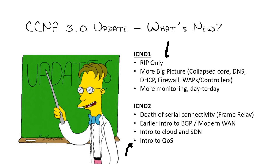ICND1 brings back the RIP protocol that was yanked out in the old rendition — it was kind of an honorable mention before. Cisco has removed OSPF from ICND1 and moved it more into the ICND2 world. OSPF is the more popular and complex protocol. People ask: am I going to use RIP? Probably not in the real world, but it's good to learn because once you learn RIP, you understand how routing protocols are supposed to work, and then you only enhance your knowledge as you learn OSPF. It's a lot less about configuration and more about: do you get the big picture?